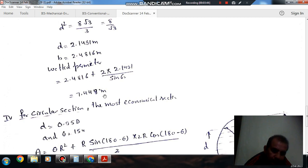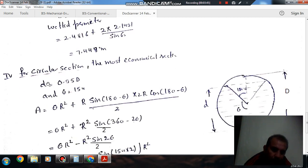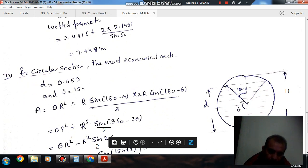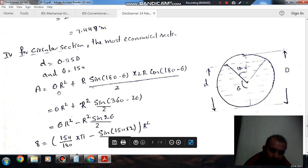Now for circular section, the most efficient section is when depth of flow equals 0.95D, or theta is 154 degrees. This is the condition for most efficient circular section.